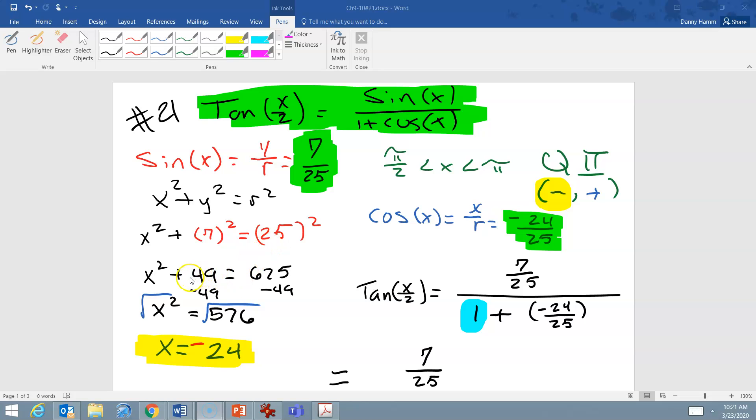And so in doing that, we solve and we get positive 24. And this is where that quadrant comes in handy. Since we know that we're in quadrant 2, our cosine must be negative, and therefore, this 24 must also be negative.